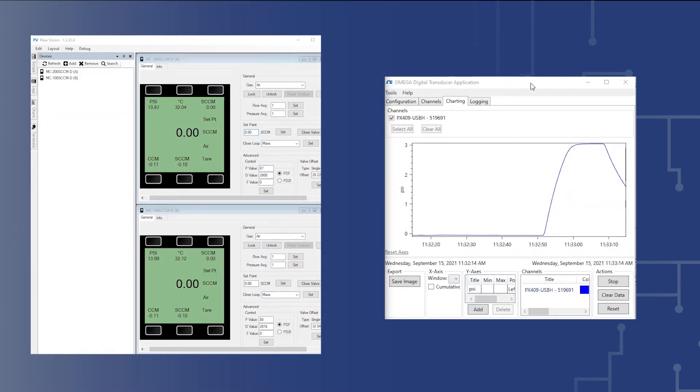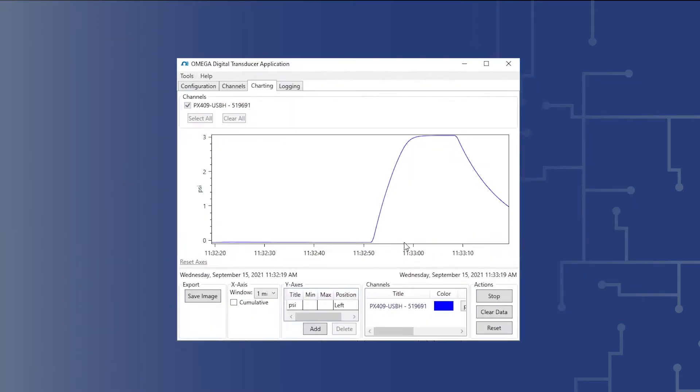If there are no leaks, then the pressure should remain constant. The pressure dropping after the gas flow is turned off indicates a system leak. If there are system leaks, the pressure in the system will drop when the sheath gas flow is stopped.